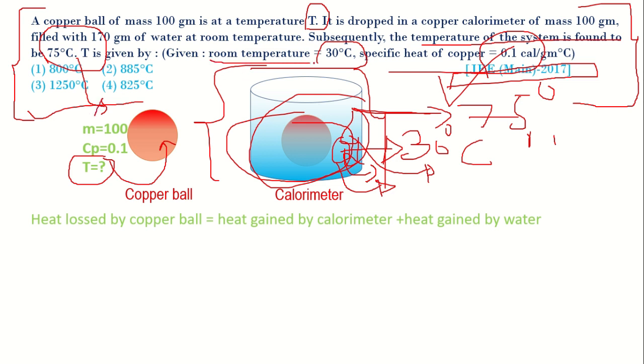Because it is given that the room temperature is only 30 degrees Celsius, to increase the temperature of this system there is only one way, that is the temperature of this copper ball should be higher than this one. So that is why we are saying heat lost by copper ball equals heat gain by calorimeter plus heat gain by water.